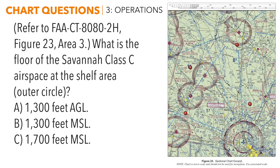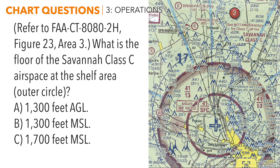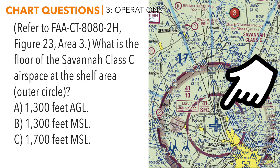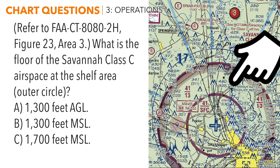Our first question says: refer to figure 23, area 3. What is the floor of the Savannah Class C airspace at the shelf area, outer circle? We go to area 3 and find Savannah, which is to the south — that's the only Class C airspace on this chart. Remember, Class C airspace has two areas: an inner core area that starts at the surface and goes up to a designated altitude.